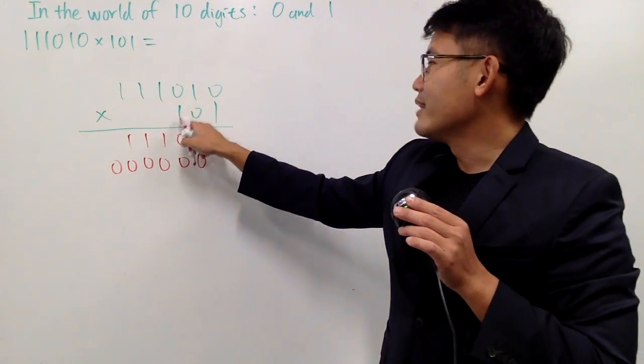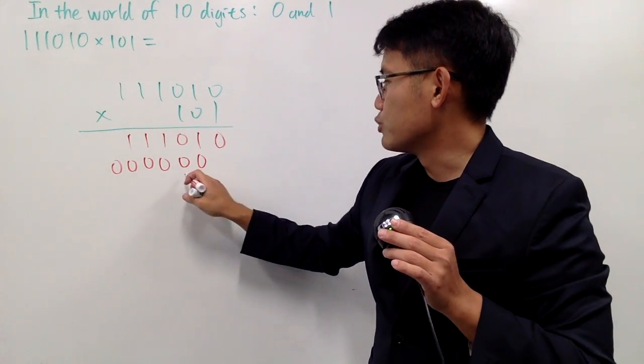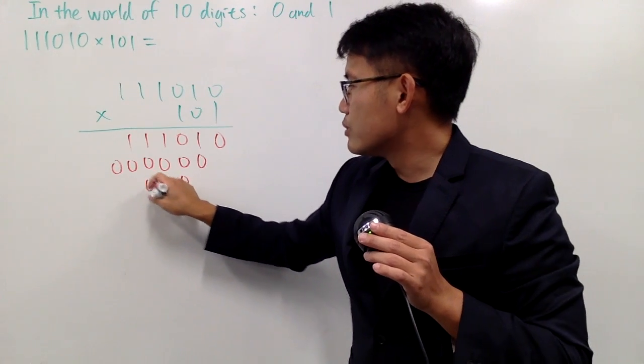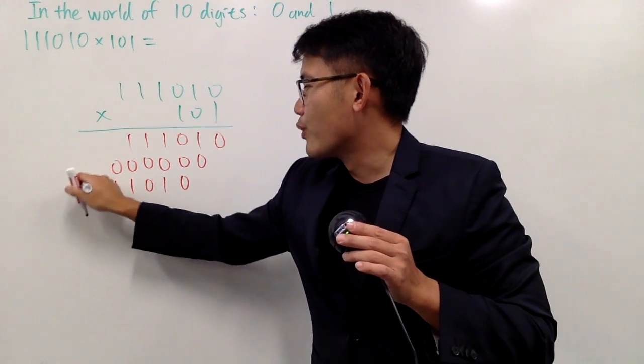And lastly, we do one times all that. And this is the third place, you start right here. So pretty much write this down again. 010111. And of course, you add them up.